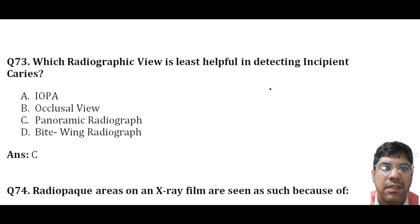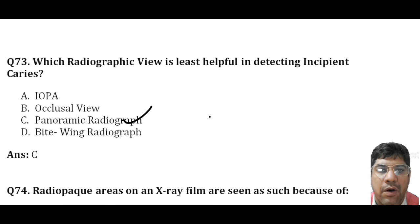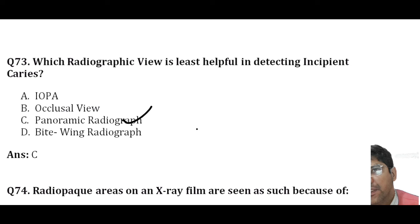Which radiograph is least helpful in detecting incipient caries? It is the panoramic radiograph. Panoramic radiographs are less effective in detecting small caries lesions or fine structures of marginal periodontium or periapical disease, compared to IOPA, occlusal, and bite wing radiographs that are more suitable for caries detection.